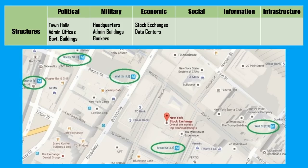Up next are economic structures — things like stock exchanges, banks, and markets. Also in today's world, data centers where financial data is stored. We're looking for specific buildings where this activity is conducted — physical server locations or physical buildings, not just a whole commercial district. If you're feeling froggy, this could also include websites and other stuff from the cyber realm.